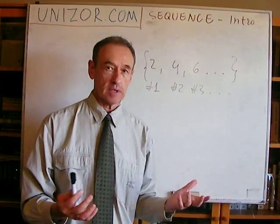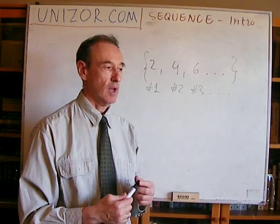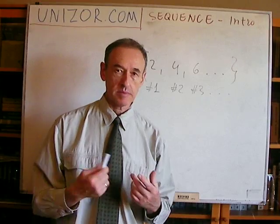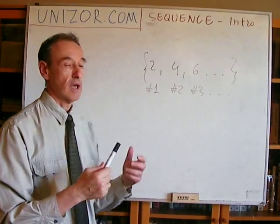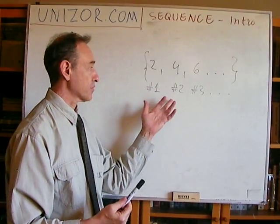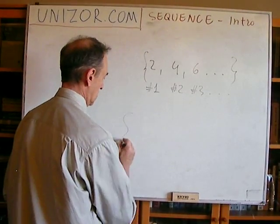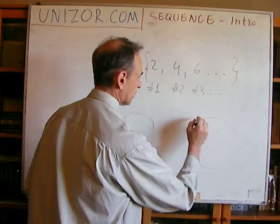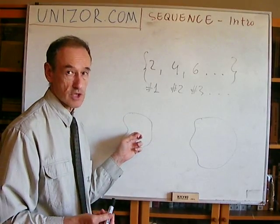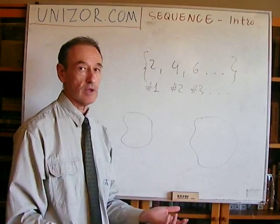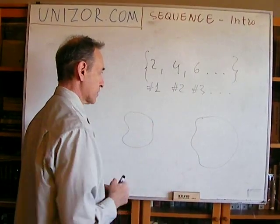Now, what does 'ordered' mean? I wrote number one, number two, number three — intuitively it's understandable. But what is it from a mathematical standpoint? It's actually quite a simple thing, because a sequence is actually a function, a representation of a function. A function has a domain and a codomain — these are where the function arguments are taken from, and these are the values of the function. So what is the domain and codomain in this particular case?